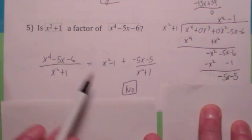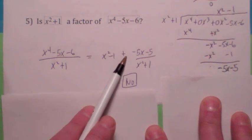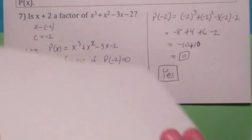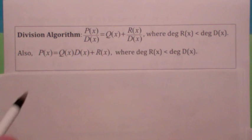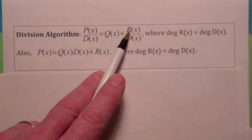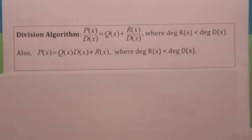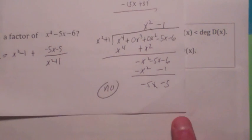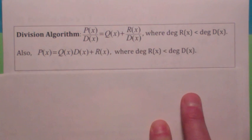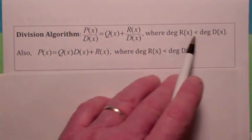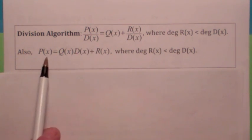The answer is no — it's not a factor. But you could say that when you divide this polynomial by this one, you get a quotient of x squared minus 1 plus the remainder divided by the divisor. That's demonstrating what's called the division algorithm. It says that when you divide one polynomial by another, you get a quotient plus the remainder divided by the divisor. It's really important to realize the degree of the remainder will always be less than the degree of the divisor — because you keep going until you can't anymore. It's sometimes more helpful to multiply both sides by d of x, and the division algorithm could also be written in that form.